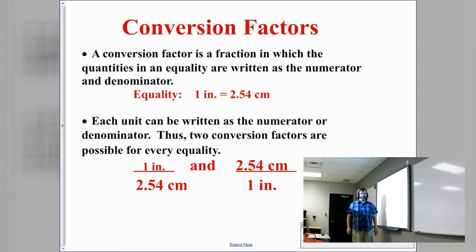To convert from one unit into another we need what are called equalities. We set those equalities up as a fraction which we call conversion factors. Conversion factors are fractions where we write one part of the equality on the numerator and one part of the equality on the denominator.